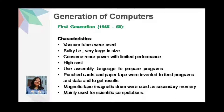The cost of these computers was very high. The computers in this generation used assembly language to prepare the programs. Punch cards and paper tape were used to feed the programs and data and to get results. Magnetic tape or magnetic drum were also used as secondary memory devices. This type of computer was mostly used for scientific computations.